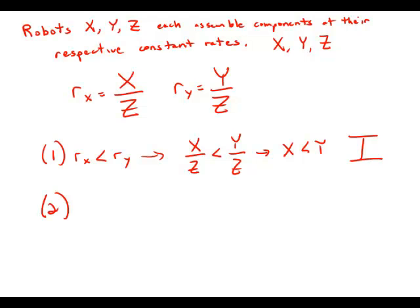Statement number two tells us that RY is less than one. Well, that's the same as saying that Y over Z, the rate of Y over the rate of Z, is less than one. Multiply both sides by Z here, and we get that Y is less than Z.